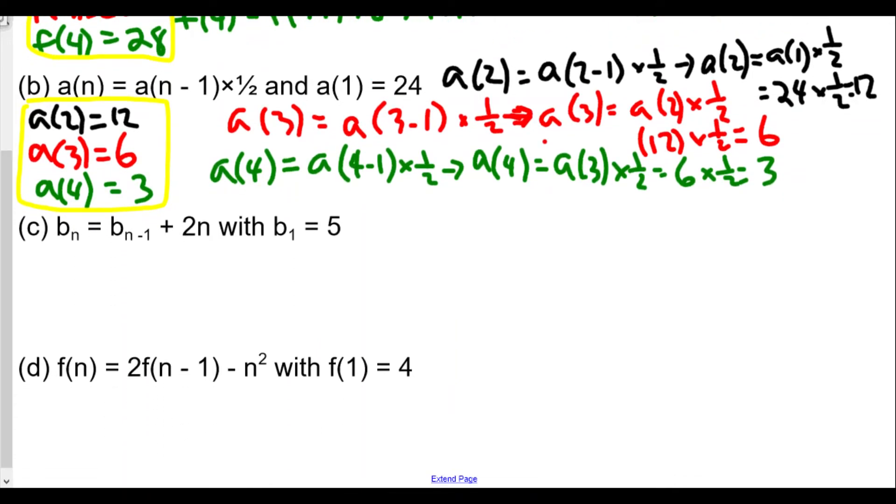All right, now let's find c. Now we use b sub n is equal to b sub (n-1) plus 2n, where b1 is 5. And they're defined differently using subscripts, but they really mean the same thing. And b1 is going to be the first term, so b2 would be the next one we're looking for. So we use the following: b2, notice n is 2, is equal to b(2-1) plus 2 times 2, because n is 2. That means we're going to have b2 equal to b1 plus 4. And so we're going to get b2 is equal to 5 plus 4, or 9. So our second term is 9.